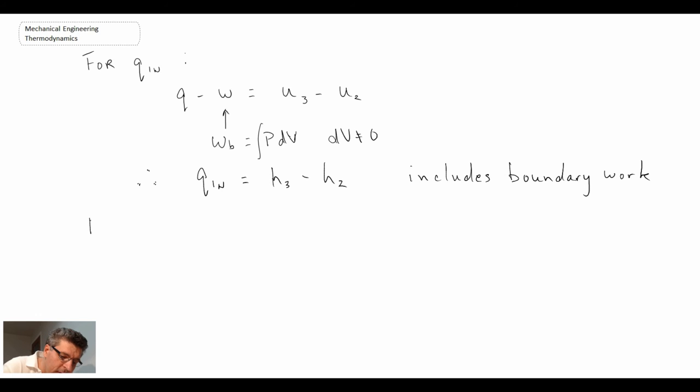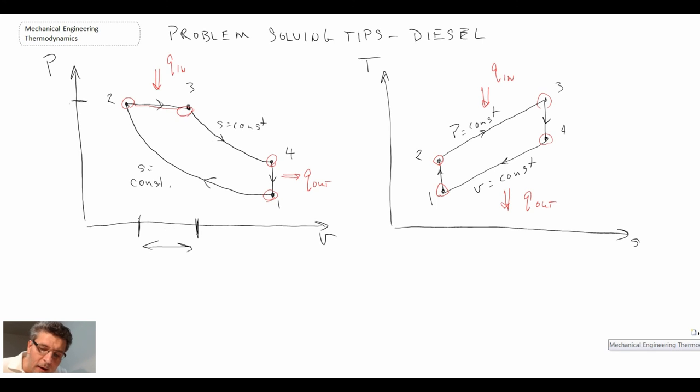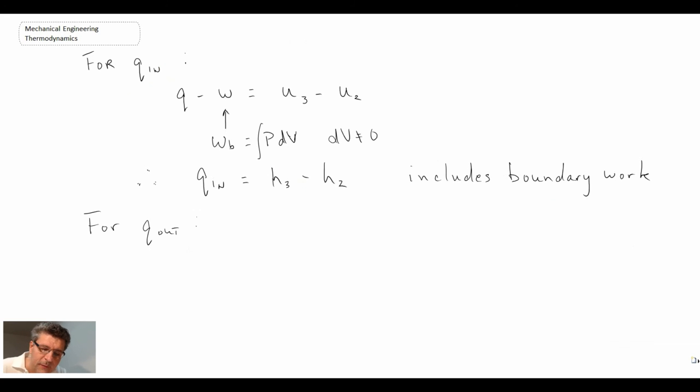So that's how we handle heat addition when we're changing the volume, because we're doing boundary work during the heat addition process. Now for q out, let's take a look back at our process diagram. This is where we have the heat rejection. So here there is no change in volume. So for the heat rejection process we do have the fixed volume, and so then when we write out the first law for a fixed mass, we can reject that work term because there's no boundary work. And so what we're left with is q out is u4 minus u1. And those are the two equations that you can use for handling the heat addition. And then finally the network is just q in minus q out like it was for the auto.